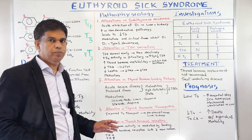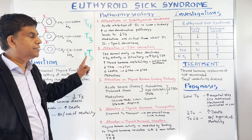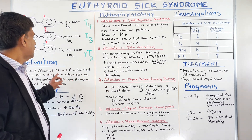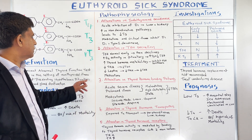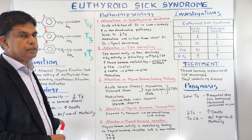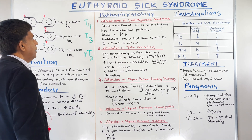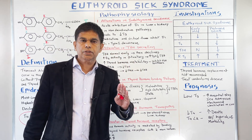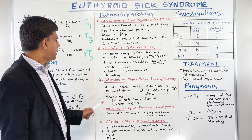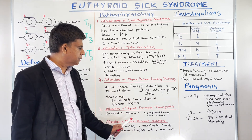Let's take a step back, look at our whiteboard, and summarize. We have tetraiodothyronine, triiodothyronine, and reverse triiodothyronine — know the structure. The definition has three components: abnormal thyroid function tests, non-thyroidal illness, and no pre-existing hypothalamic-pituitary-thyroid gland dysfunction. The five pathophysiology points are: alteration of iodothyronine deiodinase (D1), alteration of TSH secretion, alteration of thyroid hormone binding protein, alteration of thyroid hormone transporters, and alteration of thyroid hormone receptors.